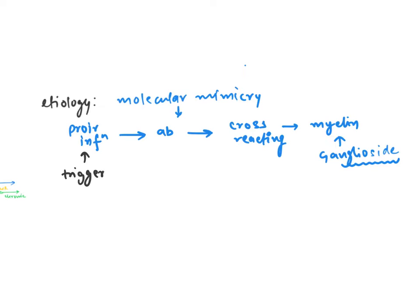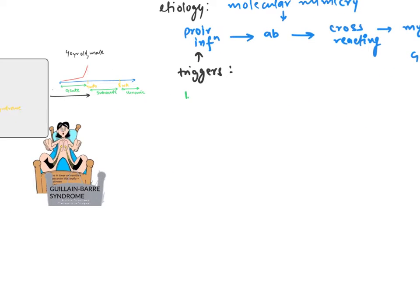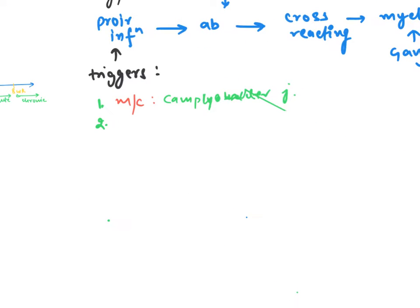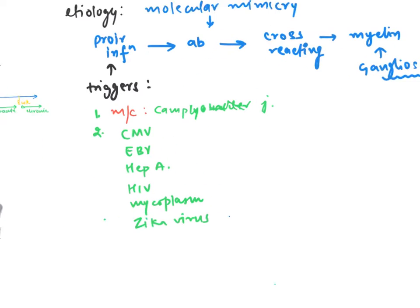Talking about the triggers in our body, the first and most common trigger is Campylobacter jejuni. Other triggers include cytomegalovirus, Epstein-Barr virus, hepatitis A and B, HIV, mycoplasma, and Zika virus. All these act as well-known triggers. The most common presenting history is diarrhea.